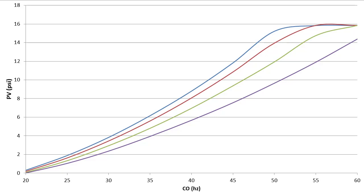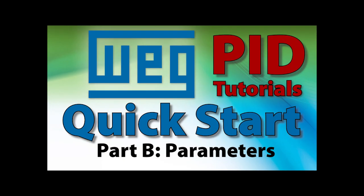The important takeaway here is this relationship between the control output, the motor speed and the process variable – the system pressure in our example. Join me in part B where we will see how understanding this is the key to setting up PID.